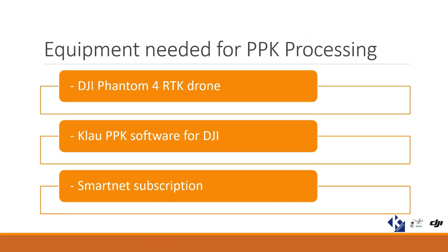The equipment needed for PPK processing is really limited and can enhance your time on site. For the Cloud software, all you really need on site is the drone itself. For this demo, all we needed was a DJI Phantom 4 RTK drone — no base station, nothing else. For the post-processing, we're going to need a SmartNet subscription, which we'll input into the Cloud software. All you need is a Phantom 4 RTK drone, and everything can be done from the ease of your office or computer after you've acquired all the imagery.